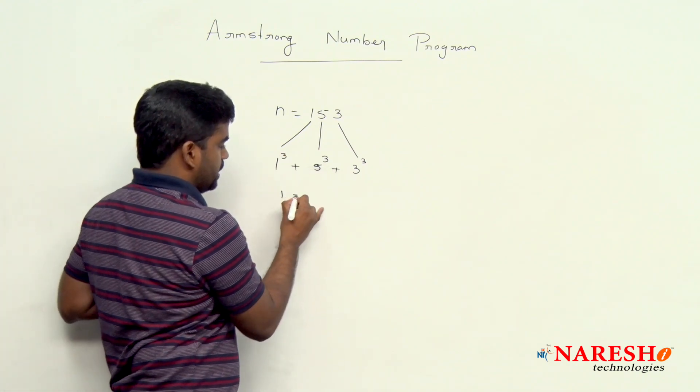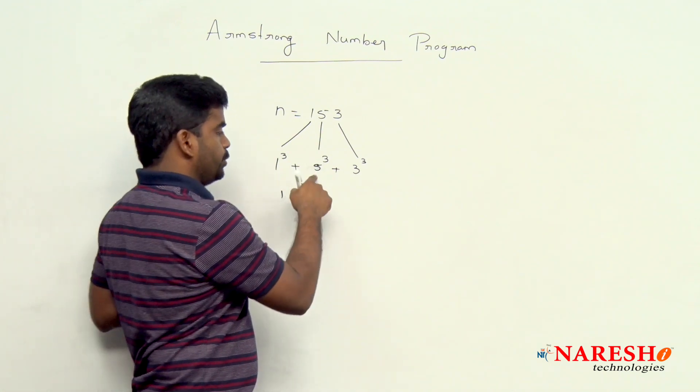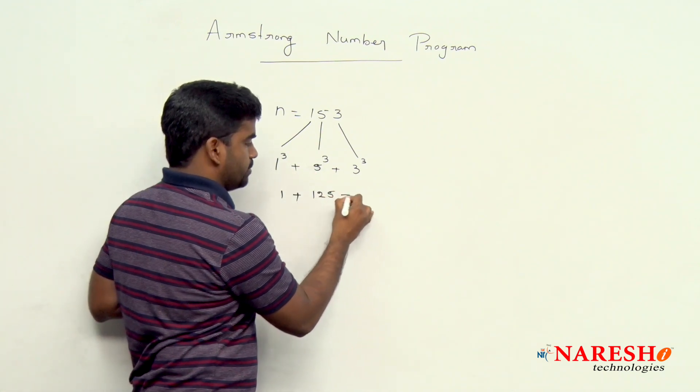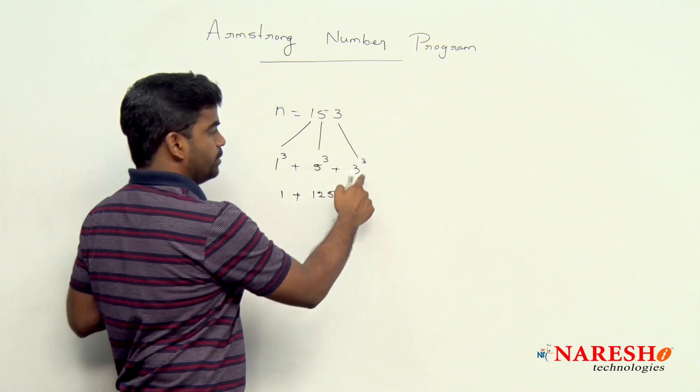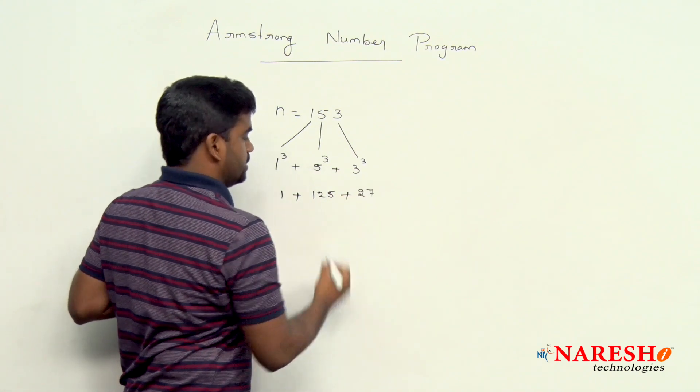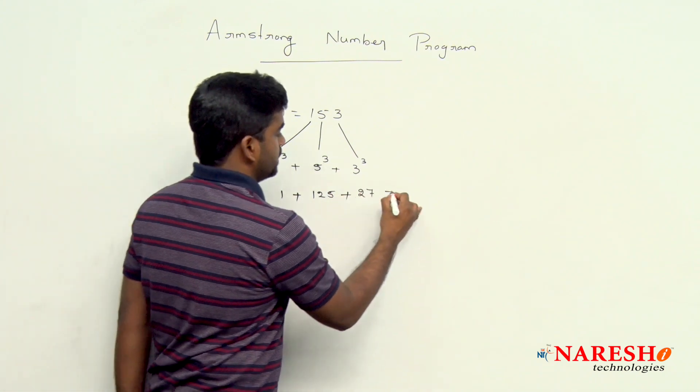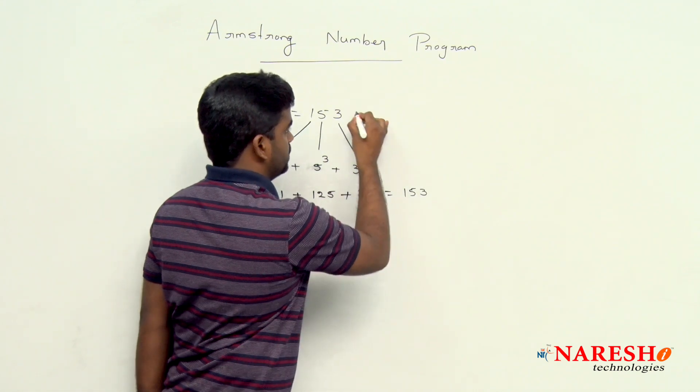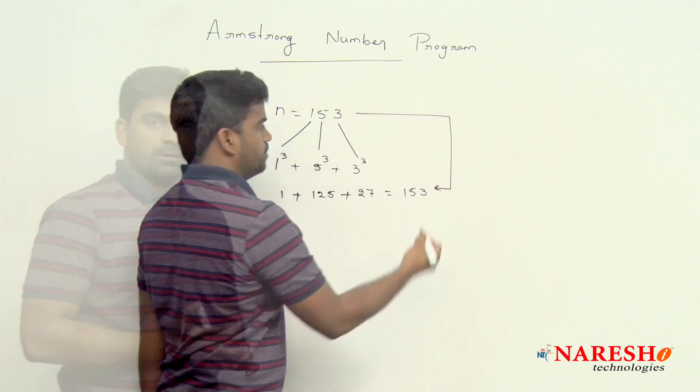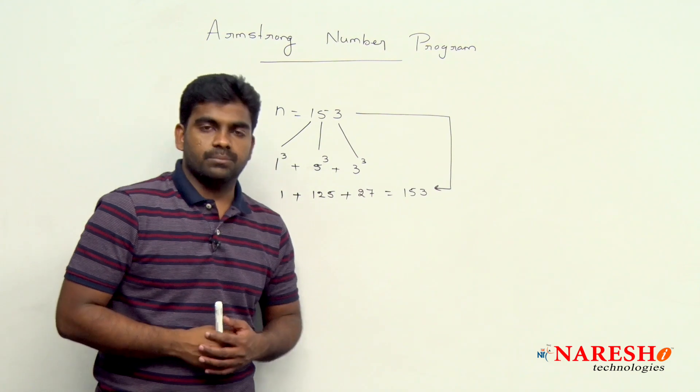1 cube is 1, 5 cube is 125, and 3 cube is 27. That value will give 153, the exact number. So this is what an Armstrong number is.